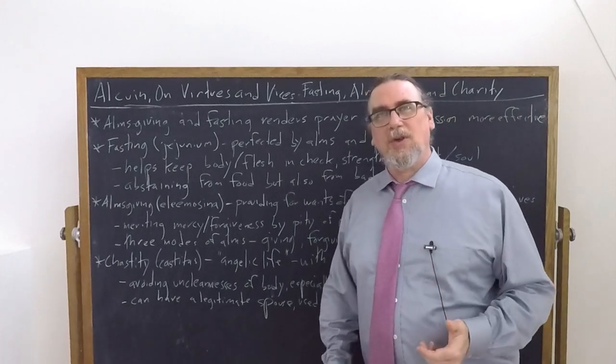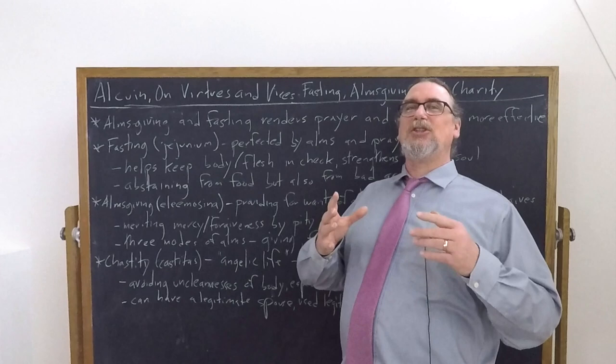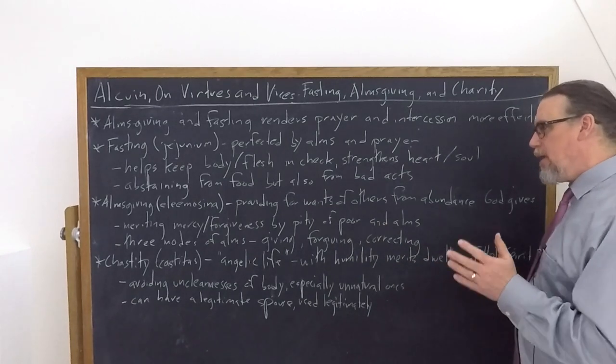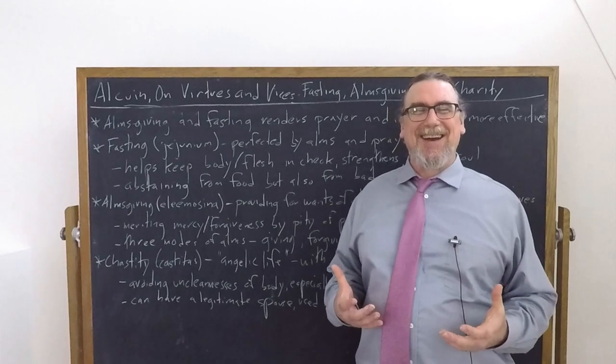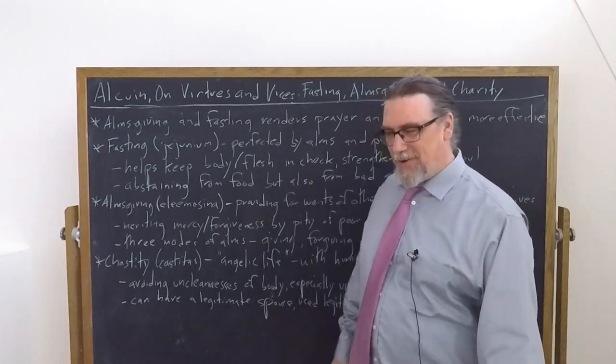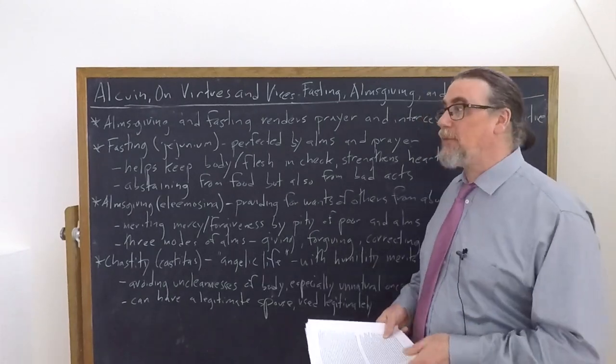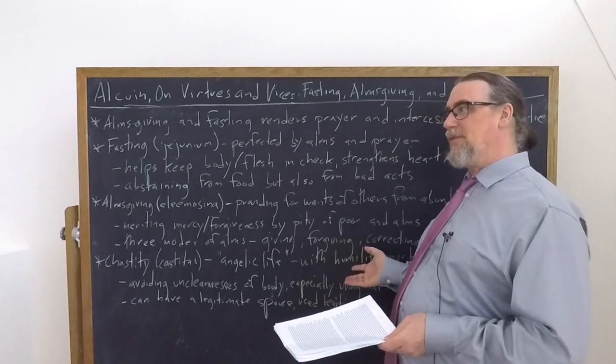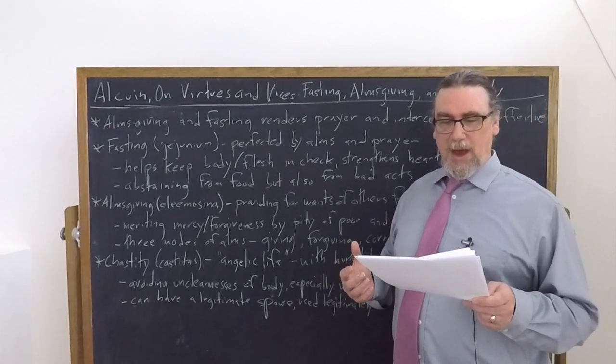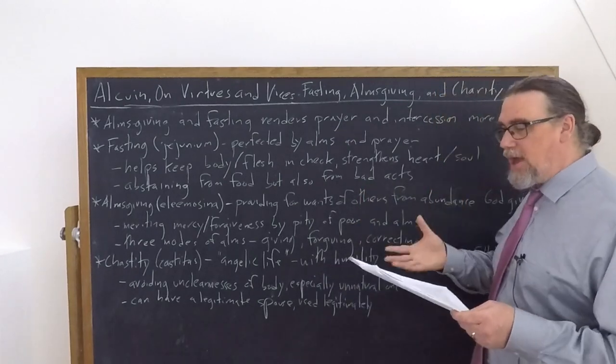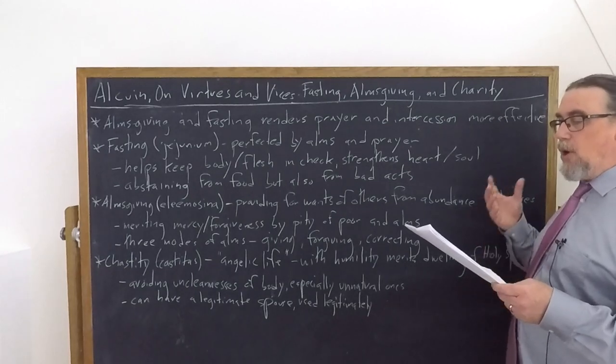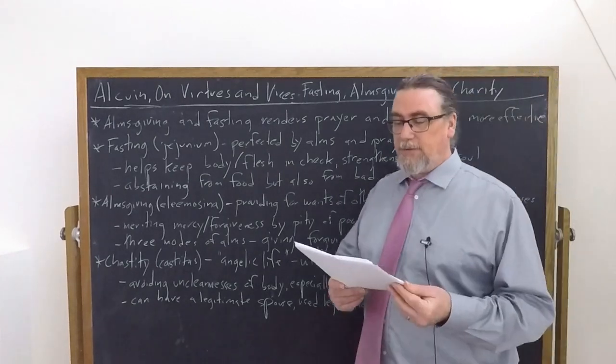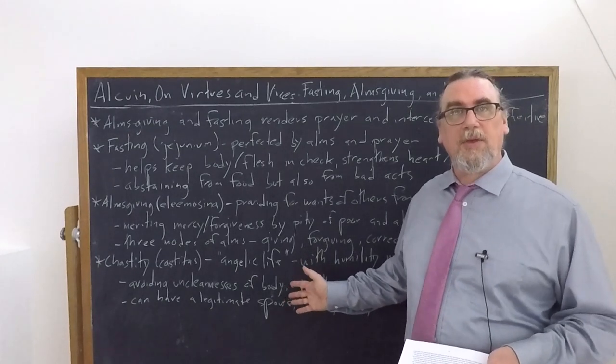What Alcuin includes under the capital vice of lust is not just sexual actions. He says it's avoiding uncleanness of body, especially unnatural ones. So things that really go against our nature. Chastity is something that's necessary to all, most greatly to the ministers of Christ altar. That is priests, monks, nuns, but he also says that there's scope for this within sexual relationships.